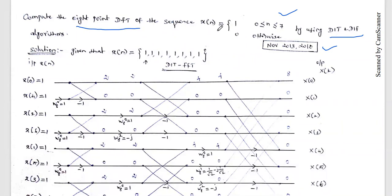The given data is x(n) equal to 1 for n between 0 to 7, and 0 otherwise. So from n equal to 0 to 7, the amplitude of x(n) is constantly 1. We can write x(n) as eight ones. This is our time domain sequence. Since there are 8 samples, capital N equals 8, so we use the 8-point DIT and DIF algorithms.